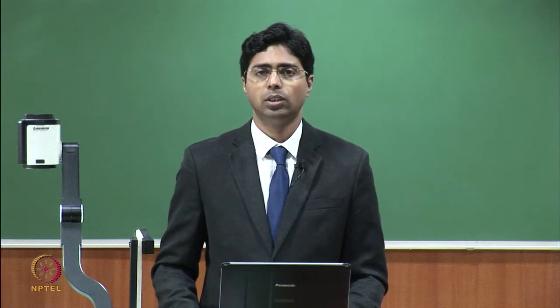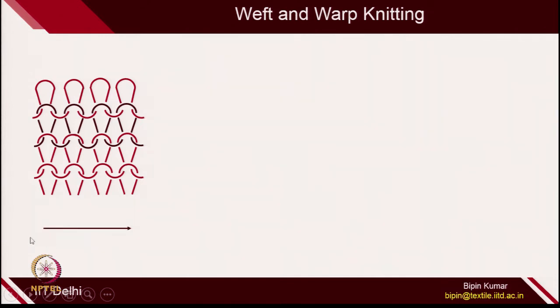What do you mean by warp knitting? In week number 1, I gave you a small hint comparing two types of knitting technologies — weft knitting and warp knitting. In weft knitting, we have done many lectures where the yarn is moving from left to right or right to left. This movement of yarn is along the fabric width, which in woven fabric technologies we call the weft direction. That's why this type of knitting is called weft knitting.